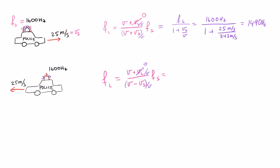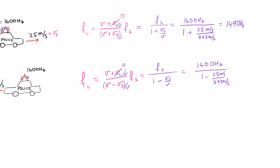So we'll have FS divided by 1 plus VS over V - which makes it 1600 Hertz. Oh, I meant minus, not plus here - divided by 1 minus 25 meters per second divided by 343 meters per second. And that will lead us to 1726 Hertz.